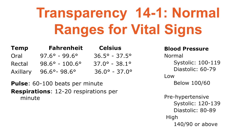Here are the ranges for vital signs. For temperature, we look at oral, rectal, and axillary. Rectal temperatures are always about one degree higher than oral on average. Axillary — underarm — temperatures are about one degree lower than oral. For blood pressure, systolic is the top number and diastolic is the bottom number.